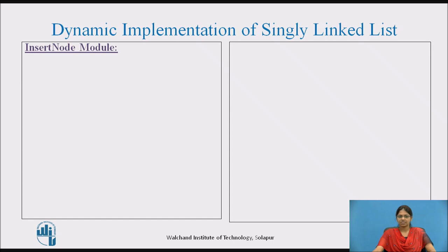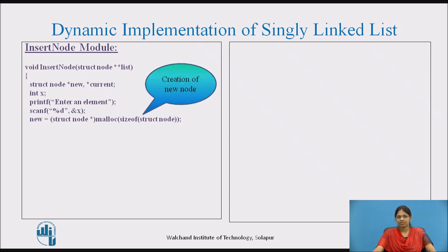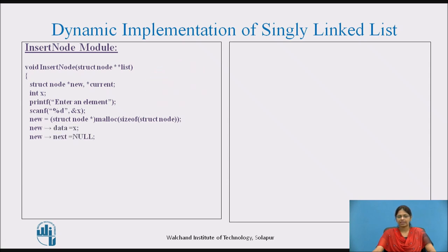Here we are going to discuss the insert node module. We declare two pointers — new and current — and a variable integer x. We take the element from the user and store it in x. Then we allocate memory to the new node using the malloc function, creating a node with x in the data part and null temporarily in the next part.